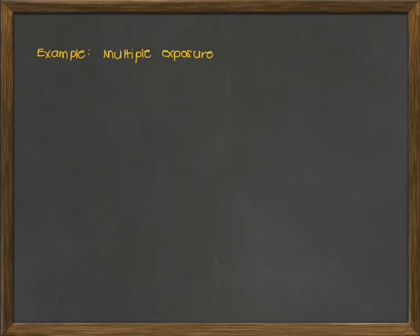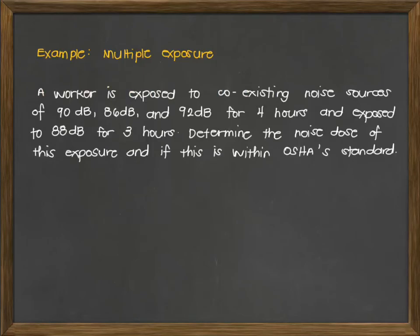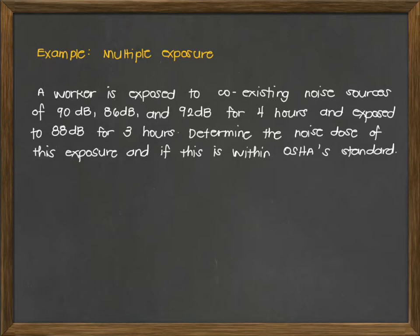For the multiple exposure example: a worker is exposed to coexisting noise sources of 90 dB, 86 dB, and 92 dB for 4 hours, and exposed to 88 dB for 3 hours. Determine the noise dose and whether this is within OSHA's standard. We are given two exposures — one for 4 hours and one for 3 hours — but during the 4-hour exposure we have 3 noise sources: 90, 86, and 92 dB. This is a perfect example of multiple exposure.